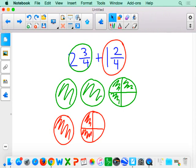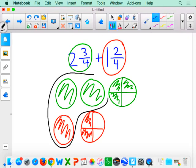Now to add these together, first I'm going to combine my wholes. I see that I have 1, 2, 3 wholes.